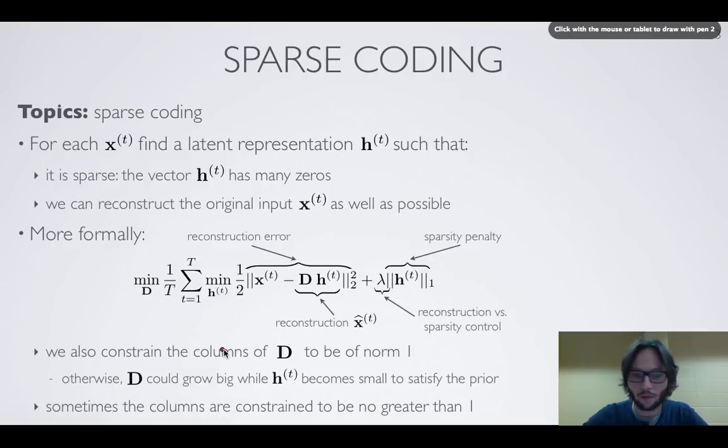Notice that we have to constrain the columns of D somehow. That's because, say we are penalizing h, if we were not constraining D in any way, then we could increase the size of the elements in D and decrease accordingly the size of the elements in h.